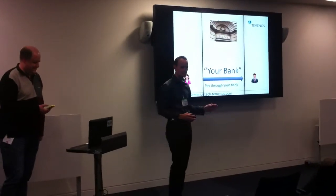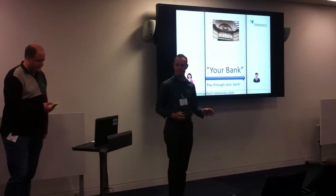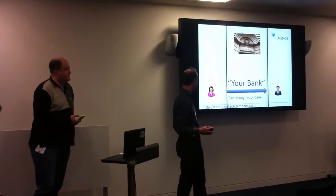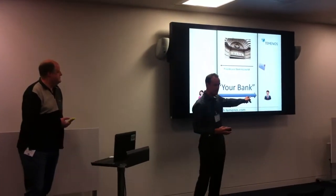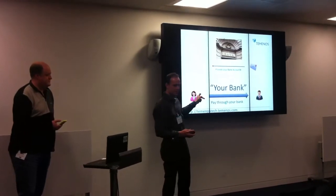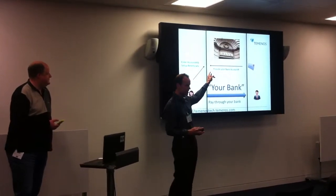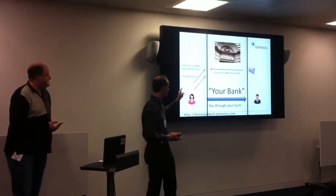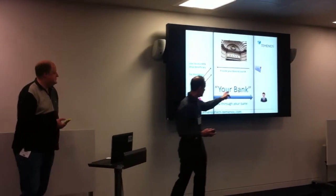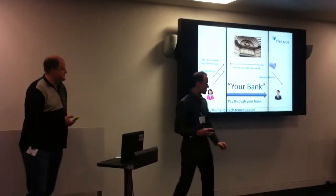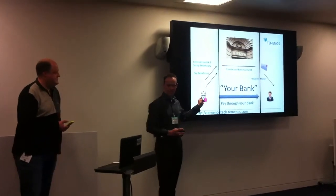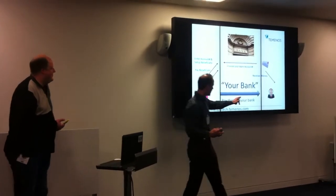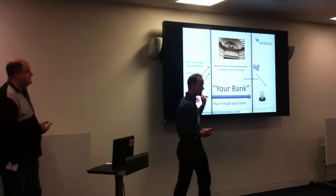Imagine you need to make a payment to your friend. Now at the moment, what you do with your traditional bank is this: he provides his account details to her, she enters the account number as a beneficiary, then she makes the payment, then he receives the money. The problem with this is she has to do a lot of work, she doesn't like doing that, and he doesn't like it either because he has to give away his account details.